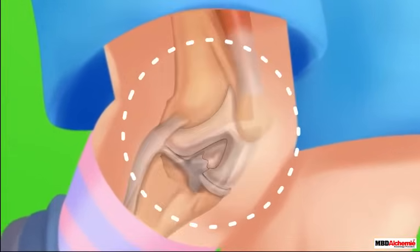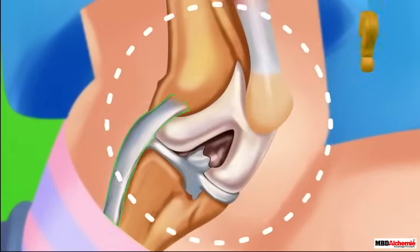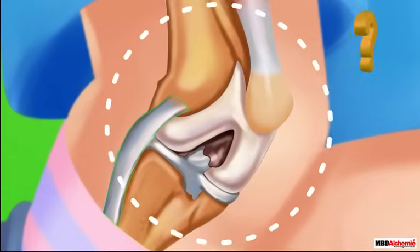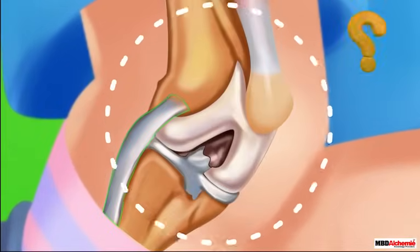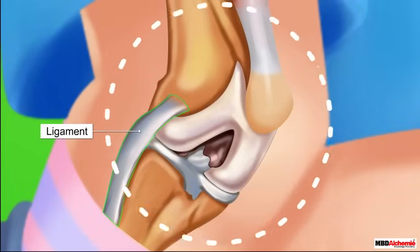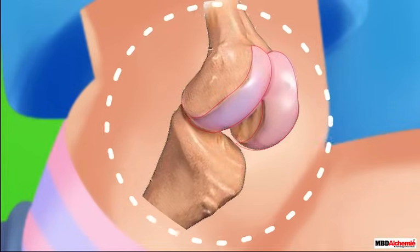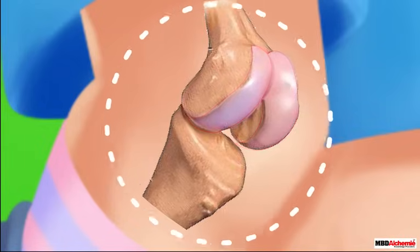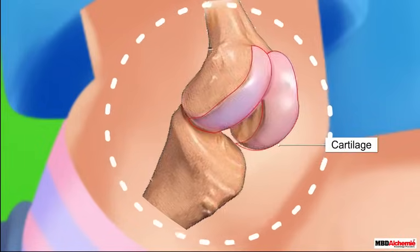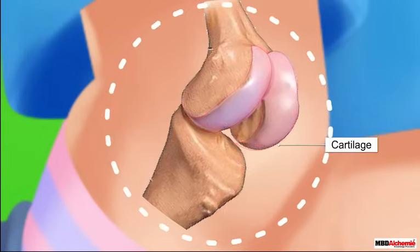There is a special tissue that holds the two bones of a joint in position — this is called a ligament. There is another soft tissue that covers a joint from outside — this is called cartilage.